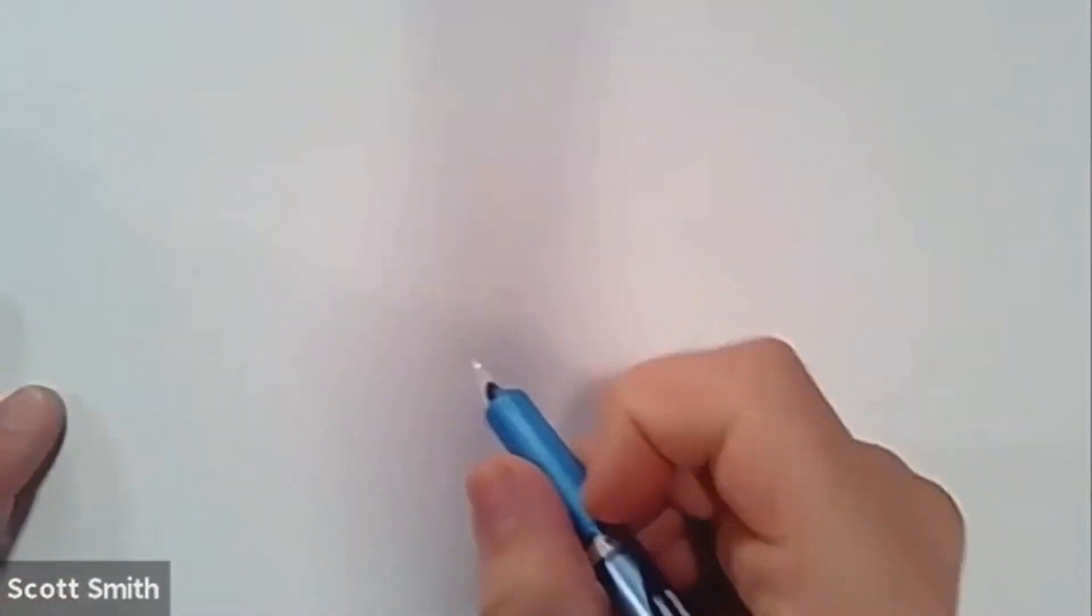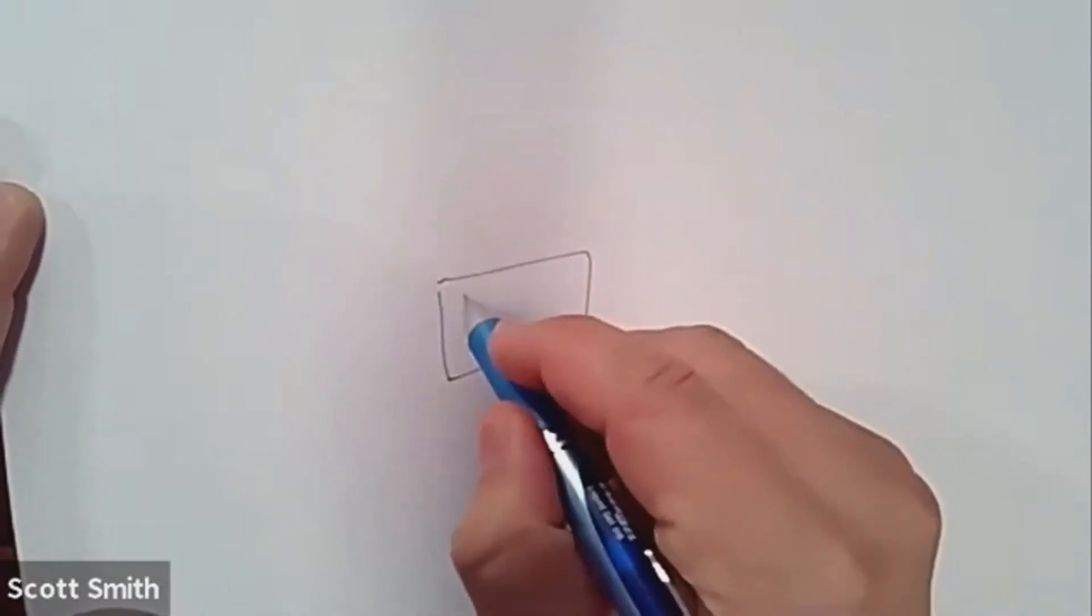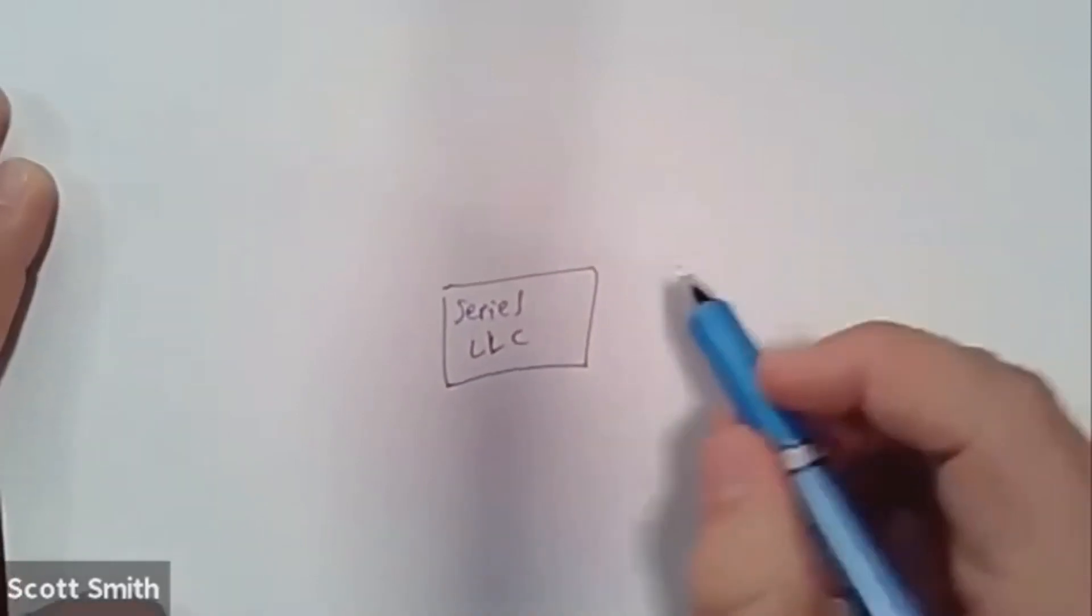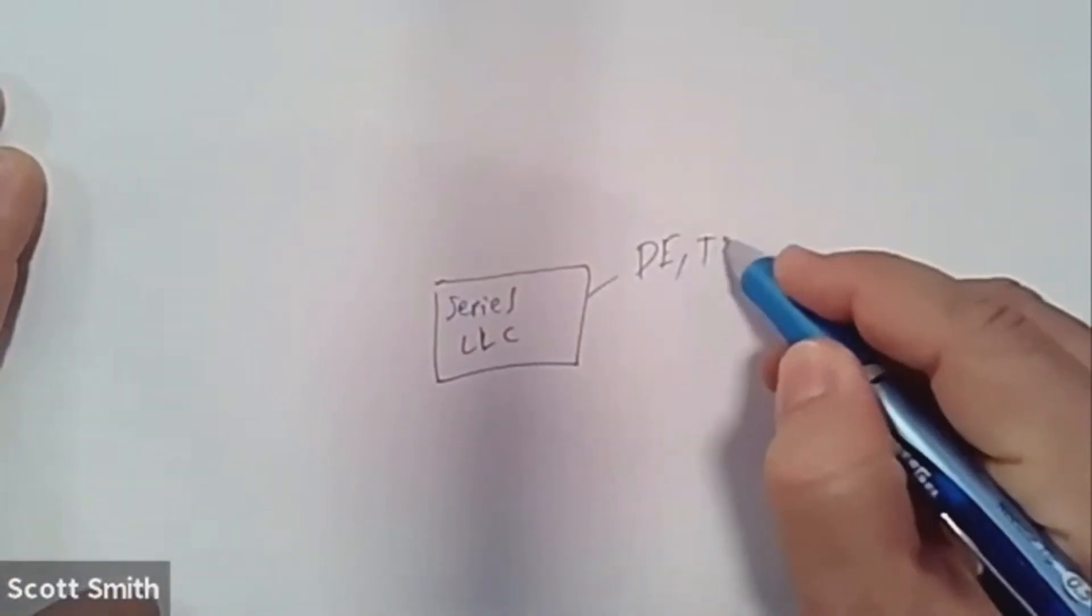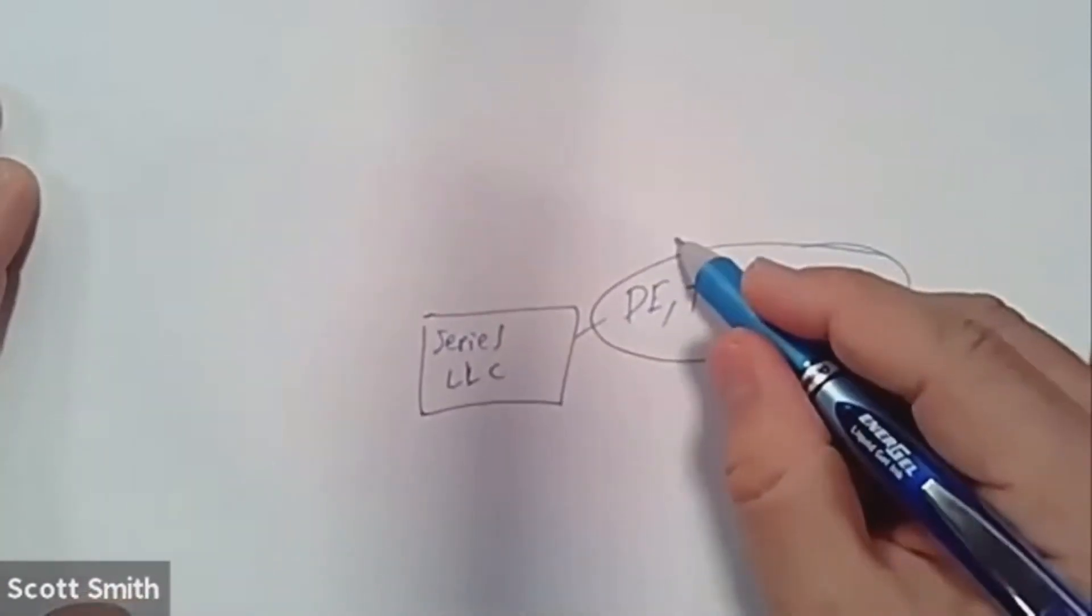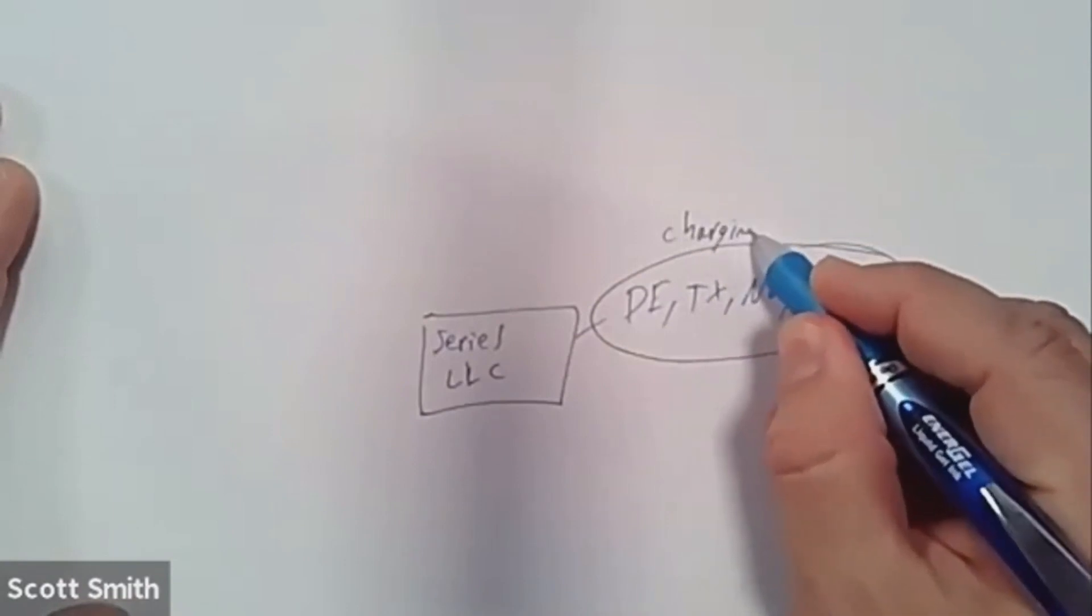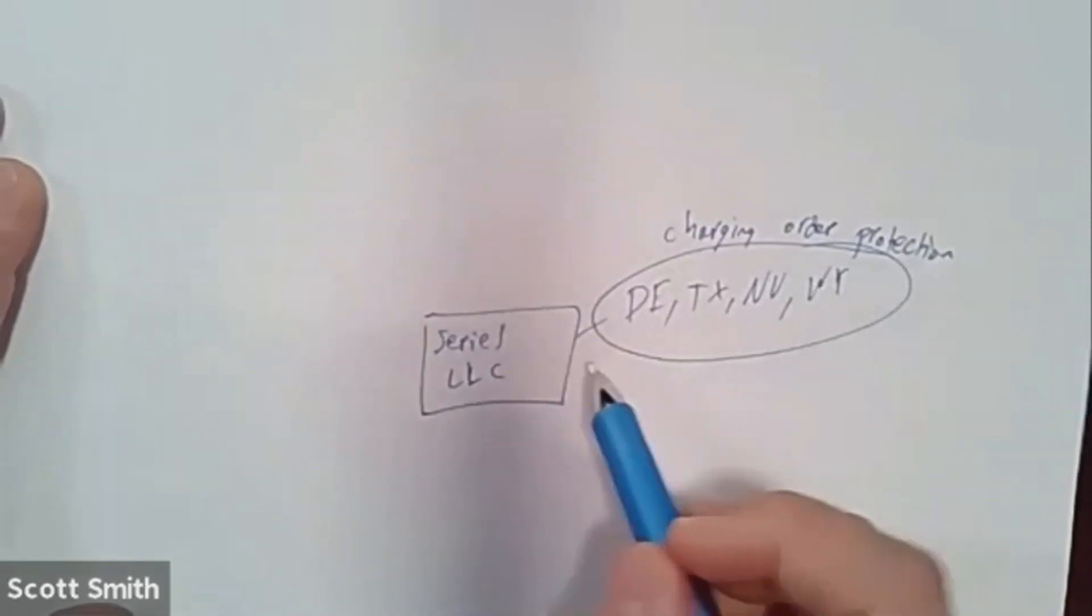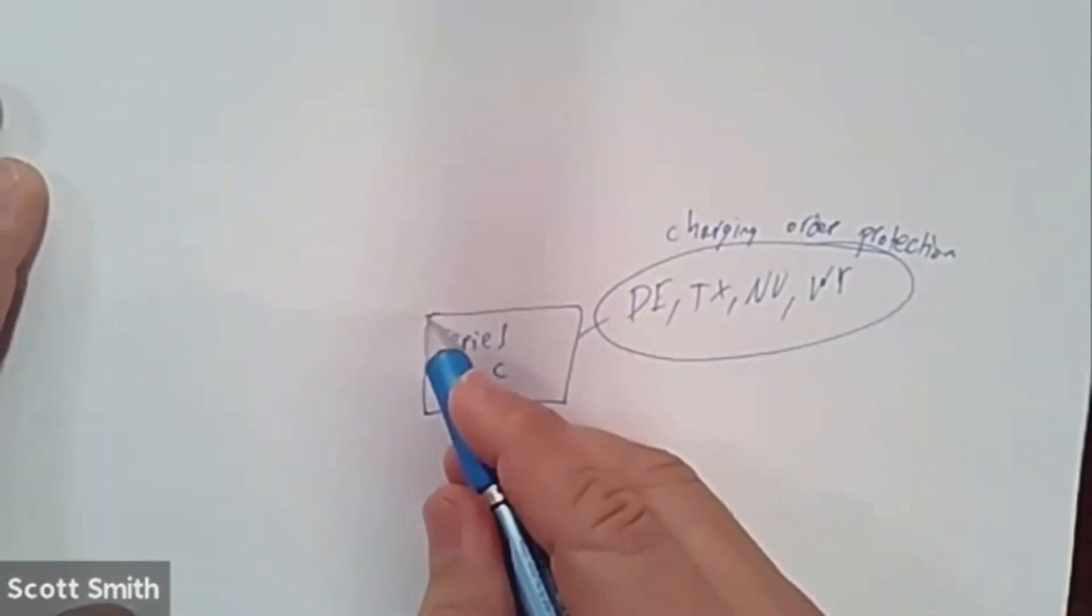So let me go ahead and jump right in here to be able to share with you a little bit more about how the Series LLC actually works. So popping in here to the Series LLC, what you end up having here is you have your Series LLC that's formed. This Series LLC is going to either be formed in Delaware, Texas, Nevada, or Wyoming. And the reason why, is these states are the ones that have something called charging order protection, which is when somebody sues you, can they get the ownership of your Series LLC.